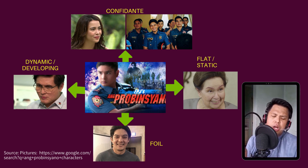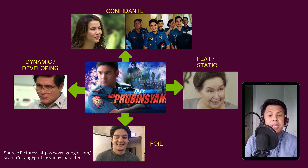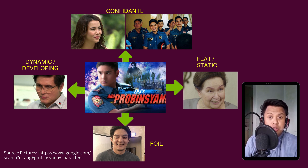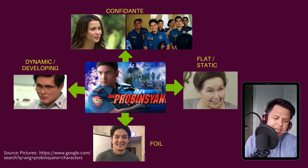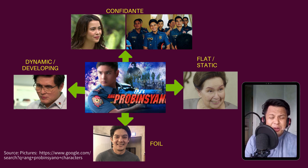You are familiar with the teleserye 'Ang Probinsyano,' right? Based on the definitions above, here are concrete examples. For Confidant, it is Miss Yashie, Pressman, or Aliana — the wife of Cardo Dalisay — and also Team Aguila. For Flat, it is Susan, Roses or the Capitana, and Lola Flora. And for the Foil, it is Romnick Sarmiento — who became a spy working with the president. And the dynamic character is the president.